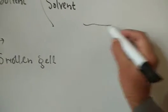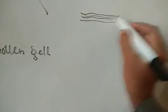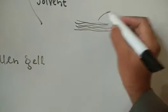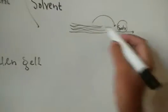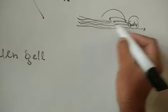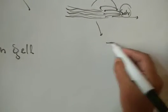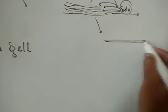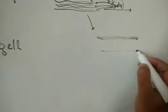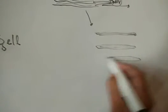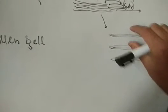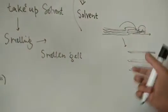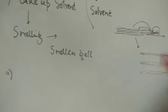Let us understand this through a cartoon. This is a polymer where a number of chains are together. When you dissolve this in a solvent, the chains absorb the solvent molecules. As a result, they get swelled up — their overall diameter increases. Each chain becomes bigger because it is getting swelled up, and the chains move apart as their radius increases. This gives you the swollen gel at the end of step one.